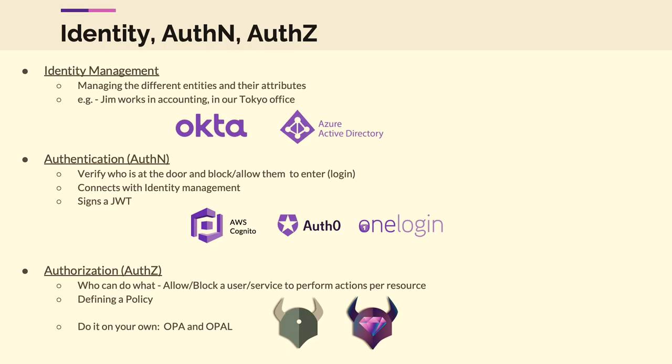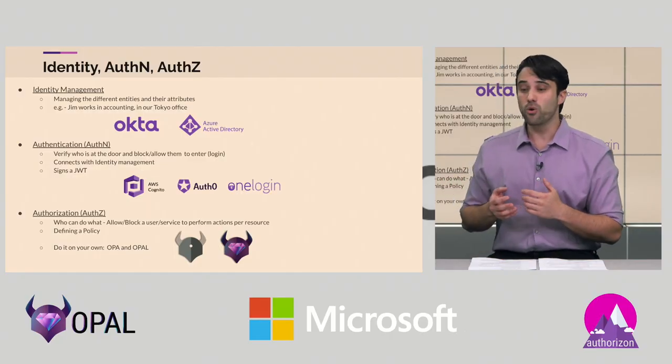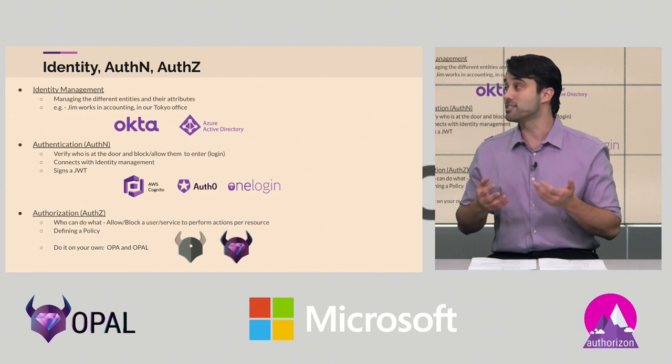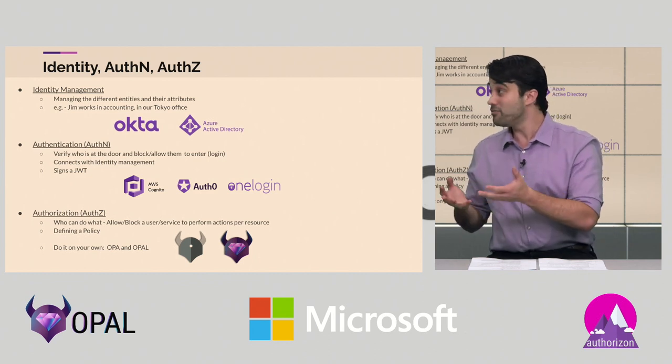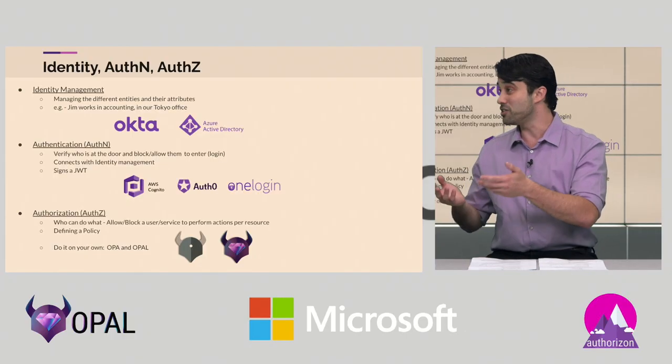What is authorization and why do you need it? Authorization is part of the IAM space, or Identity Access Management. That space is comprised of identity management, authentication, and finally authorization. While identity management and authentication already have built-in solutions like Azure Active Directory and Auth0, authorization doesn't have anything — developers are really building it on their own. It's really important to differentiate between authentication and authorization: while authentication is identifying who's at the door and deciding if you're letting them in, authorization is once they're in your house, deciding what they're allowed to do — are they allowed to sleep in your bed, eat in your kitchen, et cetera.